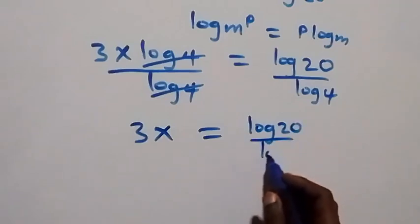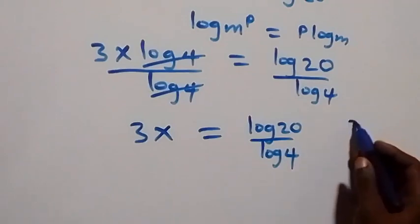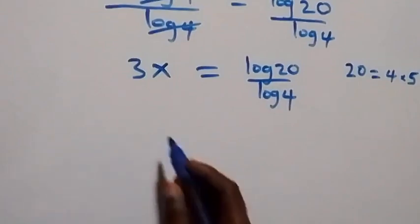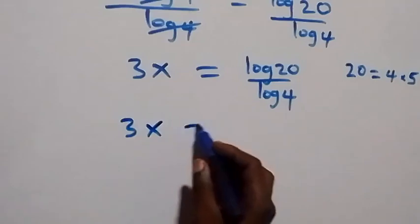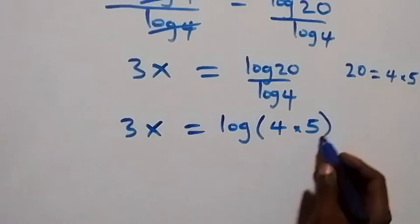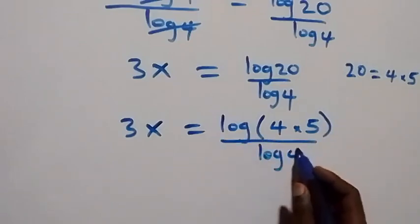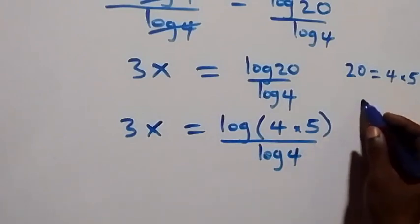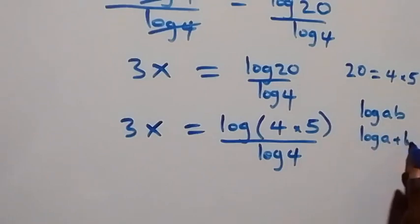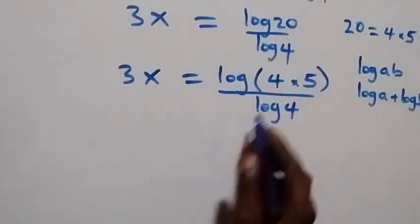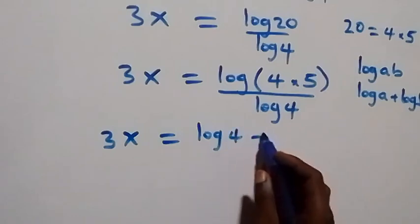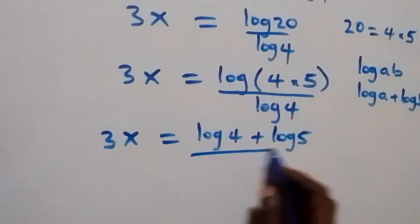From here, 20 can be written as 4 times 5, which implies we have 3x equals log of (4 times 5) over log 4. This follows from the law of logarithms: log(a times b) is the same as log a plus log b. So we separate this and have 3x equals log 4 plus log 5, all over log 4.